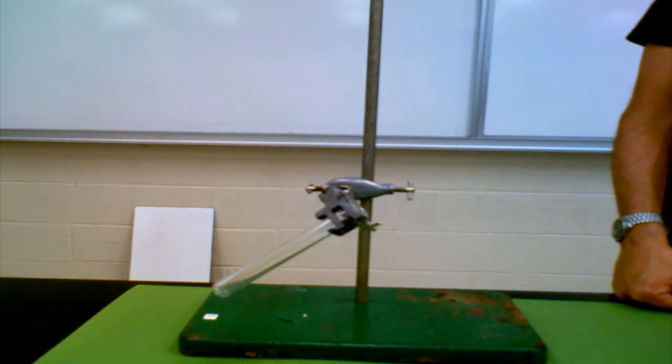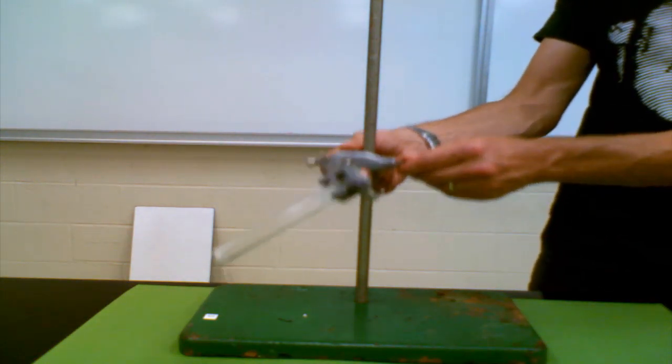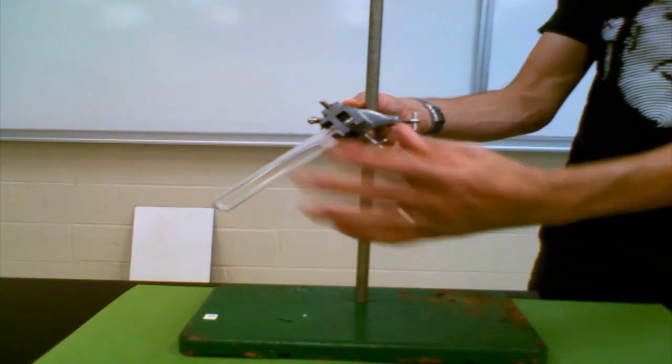That is the proper way to put a test tube into a clamp on the retort stand. Once it's in the clamp you can adjust all kinds of things.